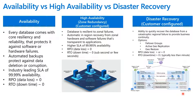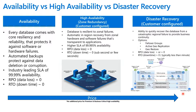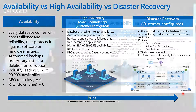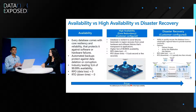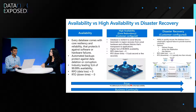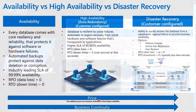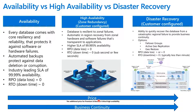There are two dimensions to think through when customers consider the three pillars. The first dimension is price. Obviously, when you go from availability to high availability and DR, price goes up because you're adding higher redundancy. There is a caveat though: with premium and business critical, high availability is free — it's included. So it's an absolute no-brainer to just turn on zone redundancy for business critical and premium.